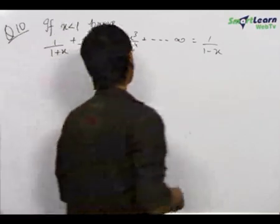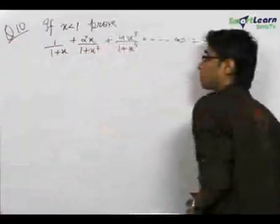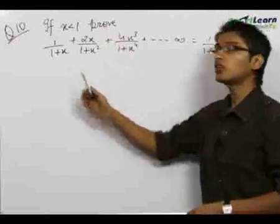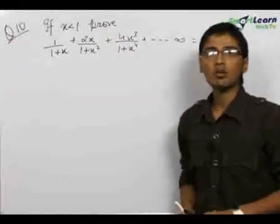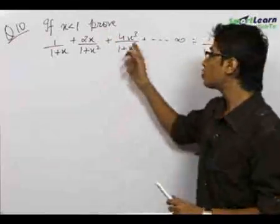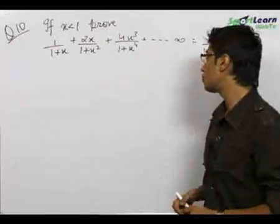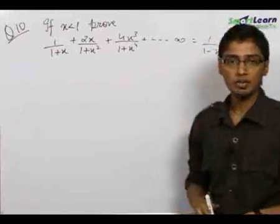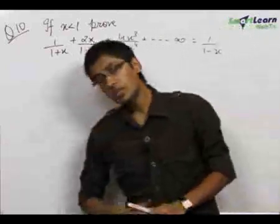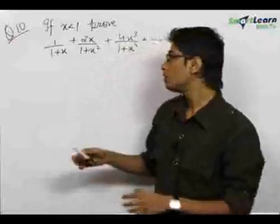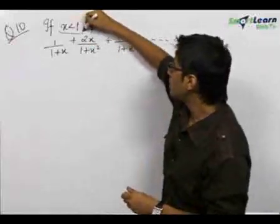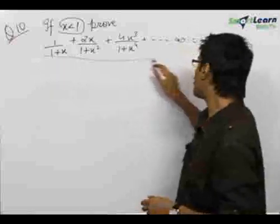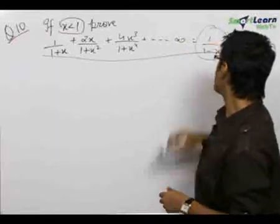Our tenth problem is a very beautiful problem. We are given: if x is less than 1, then we need to prove that 1/(1+x) + 2x/(1+x²) + 4x³/(1+x⁴) up till infinity equals 1/(1-x). You must be thinking that we are given only one piece of information — that x is less than 1 — and we need to prove this big expression equal to 1/(1-x).